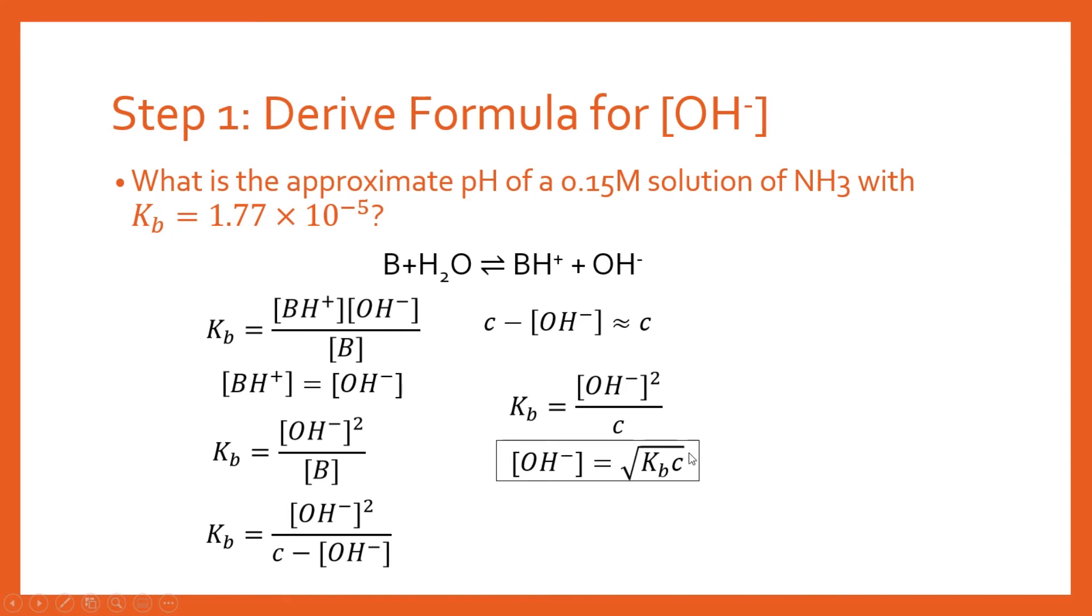We can rearrange this to get the OH⁻ concentration, the hydroxide ion concentration, and we get this really simple equation: your hydroxide ion concentration is simply going to be the square root of your Kb times your concentration. You've got Kb here, you've got concentration here.